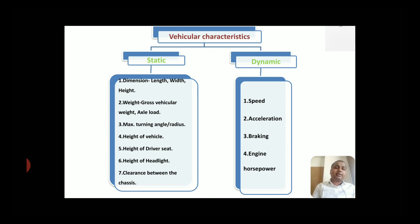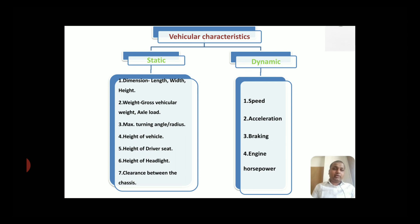These are the static vehicular characteristics. Now, under dynamic vehicular characteristics, we have speed, acceleration, braking, and engine horsepower or engine power. These are the things that come under dynamic vehicular characteristics. So today we learned about transportation system, modes of transportation, the definition and objectives of traffic engineering, road user characteristics, and vehicular characteristics.